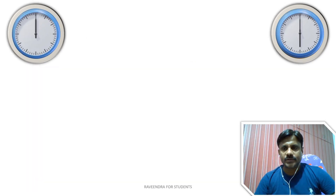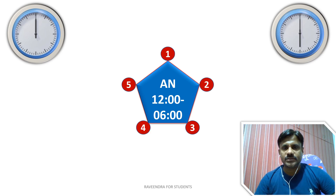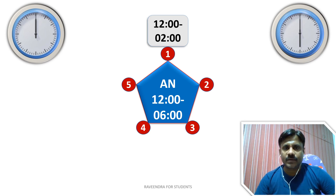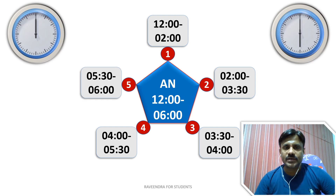After studying two difficult subjects in the morning, we enter the afternoon session — 12 p.m. to 6 p.m. — divided again into 5 sub-slots: 12–2 p.m., 2–3:30 p.m., 3:30–4 p.m., 4–5:30 p.m., and 5:30–6 p.m.